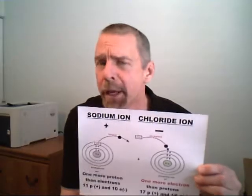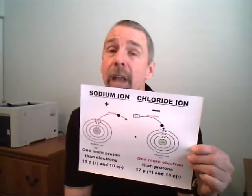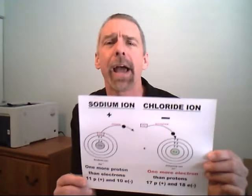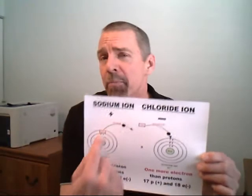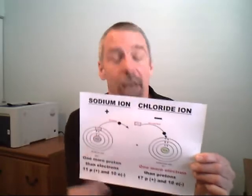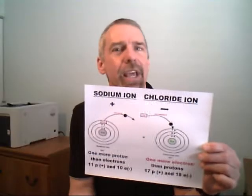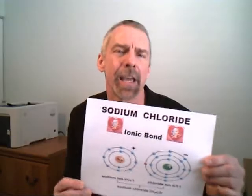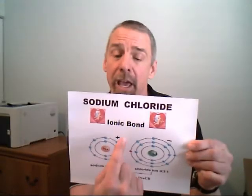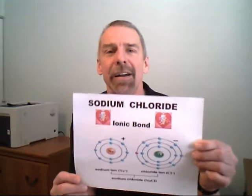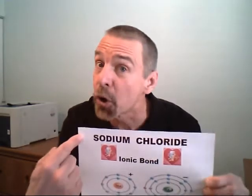The metal's positive, the non-metal's negative, they become ions. The metal's plus, the non-metal's minus, and opposites they do attract. So what you get when they come together is an ionic bond. Sodium fluoride.